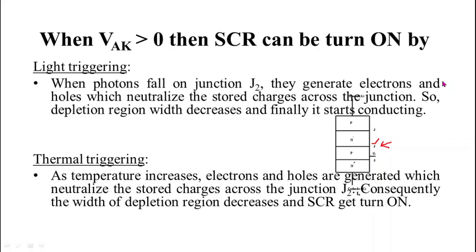So in both of these methods, the main concept behind it is to neutralize the stored charges across junction J2. In light triggering it is neutralized by generating electrons and holes using photon, while in thermal triggering these charges are neutralized by electrons and holes generated by rise in temperature. Consequently width of depletion region decreases and SCR get turn on.